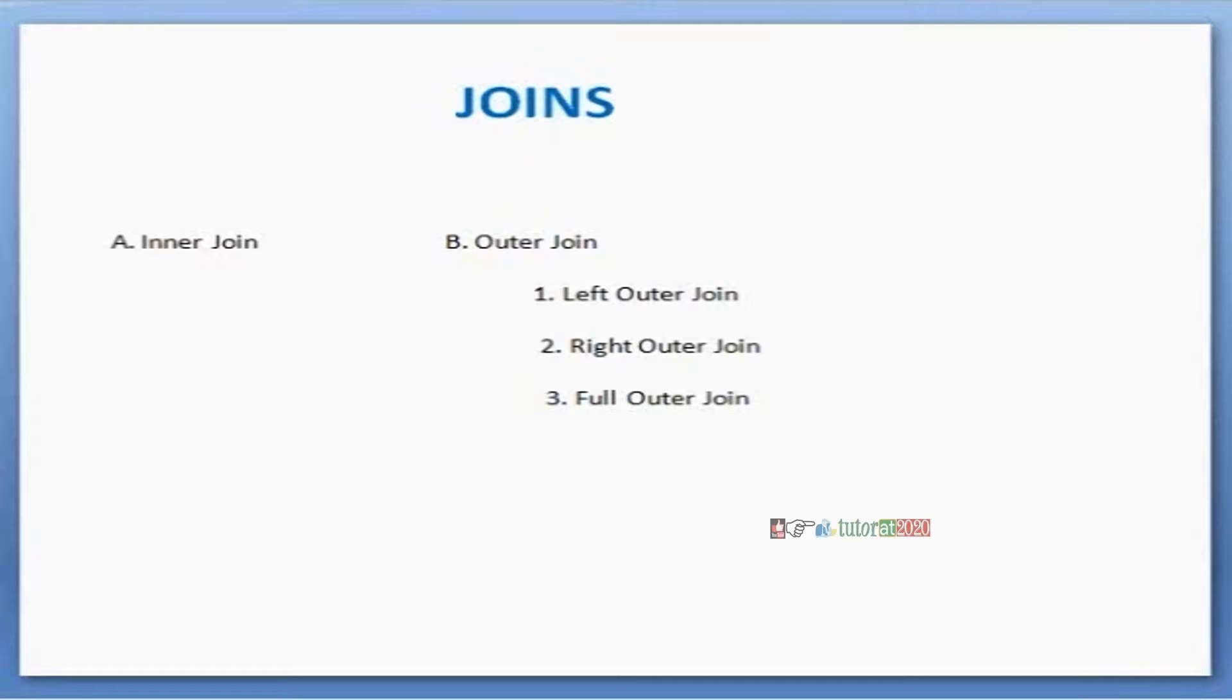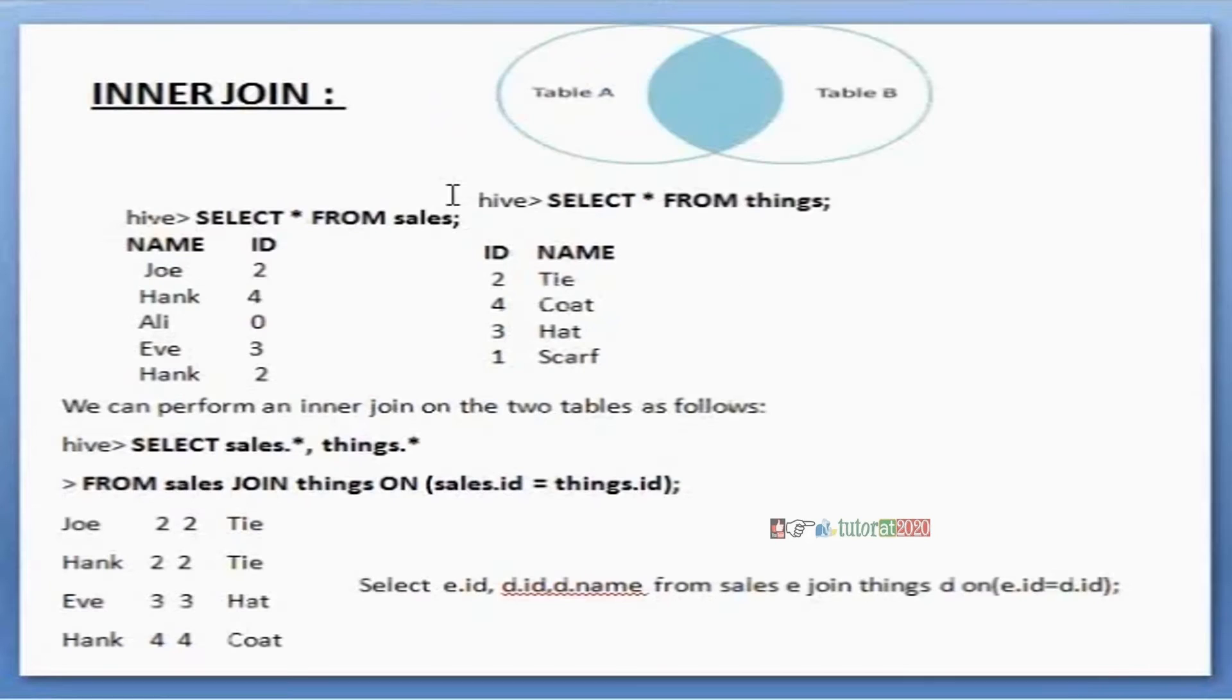Major two types are inner join and outer join. In the inner join, for example, two tables are there. Between the two tables, if I want to find common values, we call it inner join.